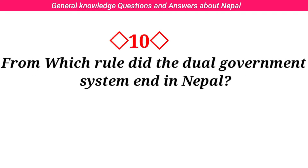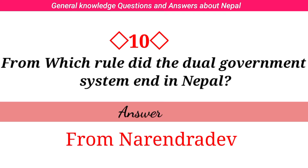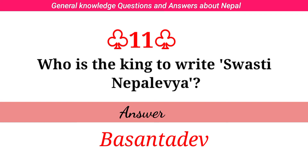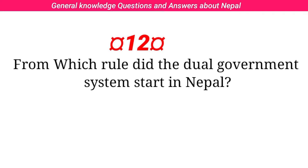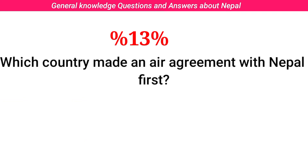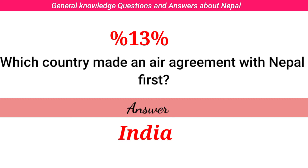What was the clan of the Lichhavi king? Answer: Suryabamshi. From which rule did the dual government system in Nepal start? Answer: from Narendra Dev. Who is the king to write such as the Nepal Via? Answer: Bhaskar Dev. From which rule did the dual government system start in Nepal? Answer: from Bhaskar Dev. Which country made an agreement with Nepal first? Answer: India.